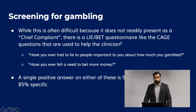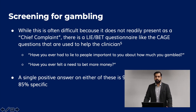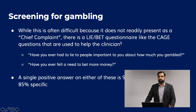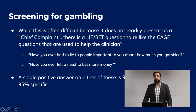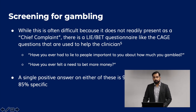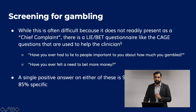How do we screen for gambling? This is often difficult because it does not readily present as a chief complaint. There is the LIE/BET questionnaire, similar to the CAGE questionnaire, used to help clinicians. The questions are: Have you ever had to lie to people important to you about how much you gambled? Or, have you ever felt a need to bet more money? A single positive answer on either one of these is 99% sensitive and over 85% specific for gambling disorder.